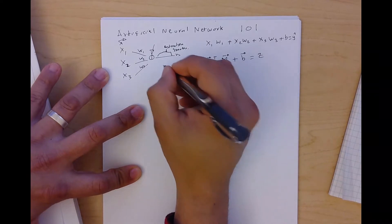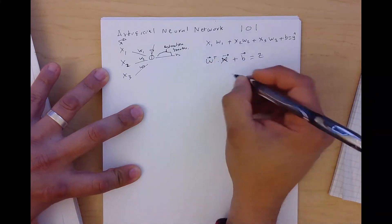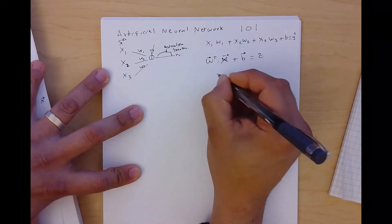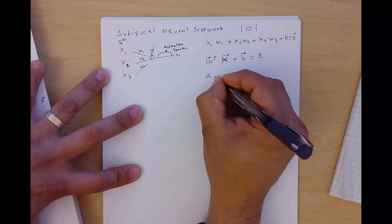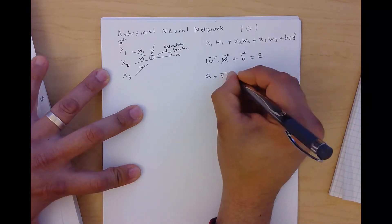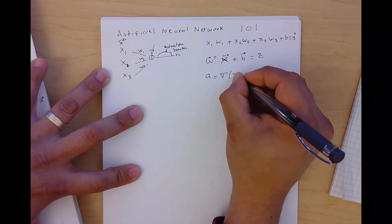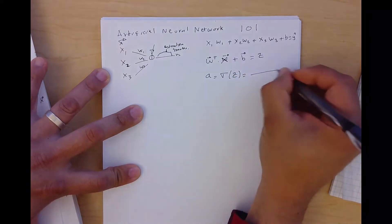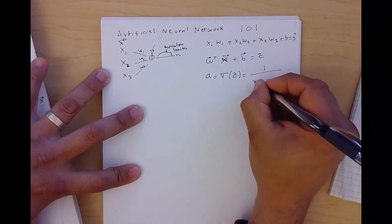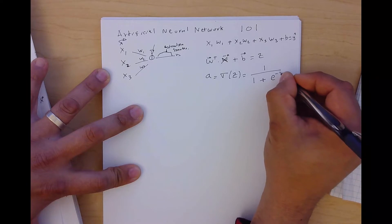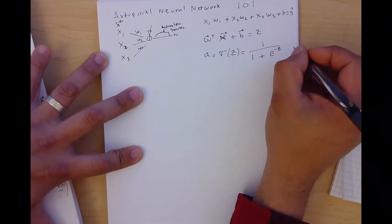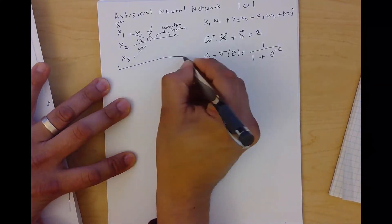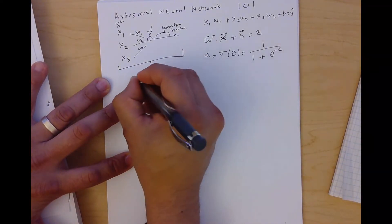What we want here is to classify between true or false — one or zero. For that we need the activation function, which gives us output a as a function of c. This part is equivalent to a logistic regression.